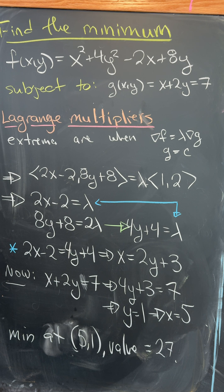Here we'll use Lagrange multipliers, which says that extrema will occur when gradient f equals lambda gradient g, where g is equal to a constant.